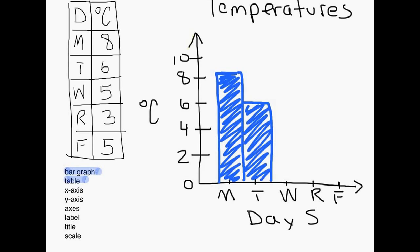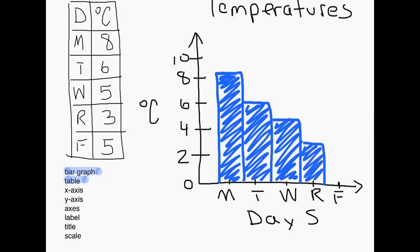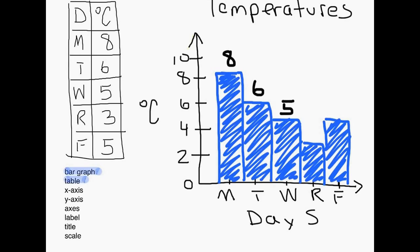Going back and looking at Wednesday — Wednesday it was 5 degrees. So I take my pen, draw it at about 5 degrees, make a bar and draw it down. Then on Thursday it was 3 degrees. And on Friday, we see the temperature each day has been going down, but then on Friday it goes back up to 5 degrees. Sometimes it's helpful to write the numbers on top of each bar so you can quickly get the information, though you don't always see this.